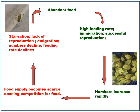With abundant food there is a high feeding rate, lots of immigration, and lots of successful reproduction, so numbers increase rapidly. But as numbers increase rapidly, the food supply becomes scarce, causing competition for food, leading to starvation, lack of reproduction, and emigration — so numbers decline and feeding rate declines. As numbers then decline, the food supply increases and the whole cycle starts again.